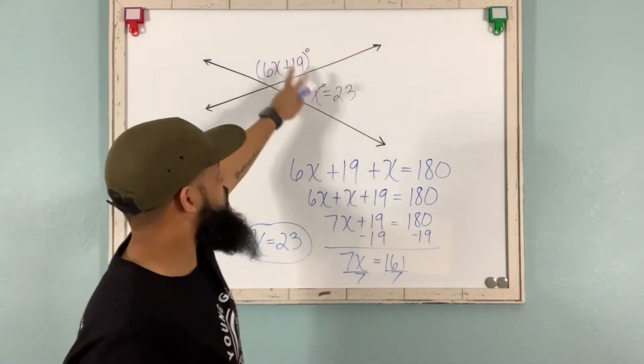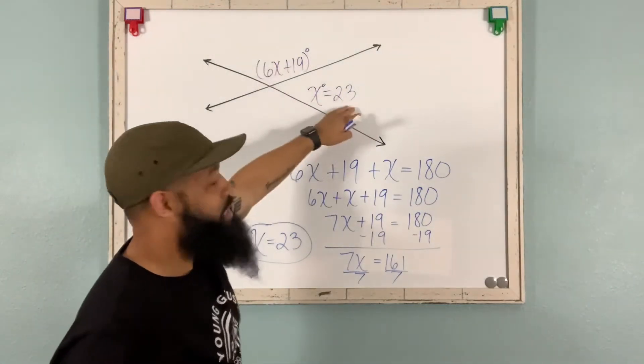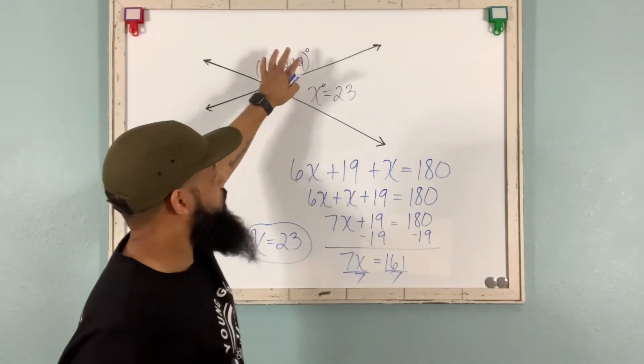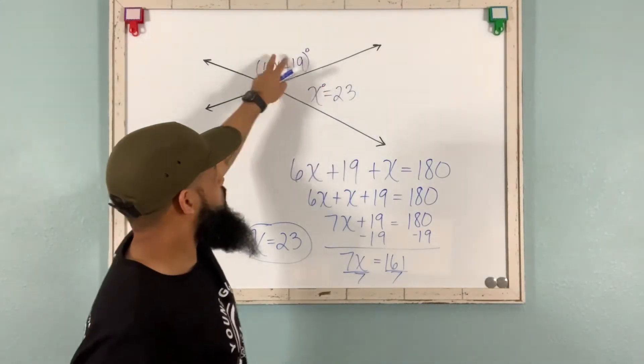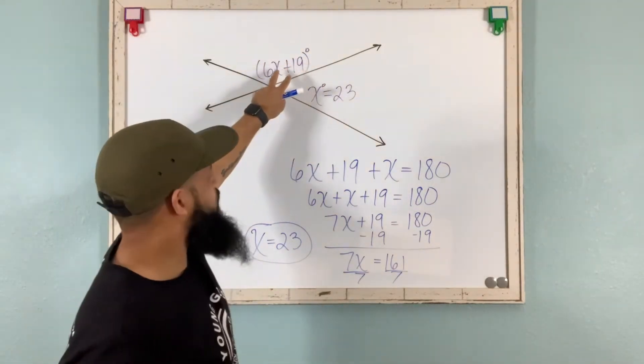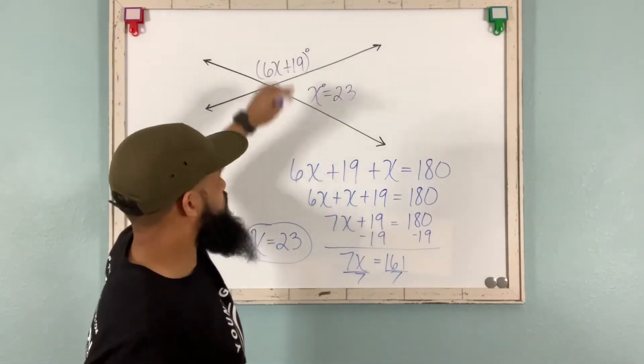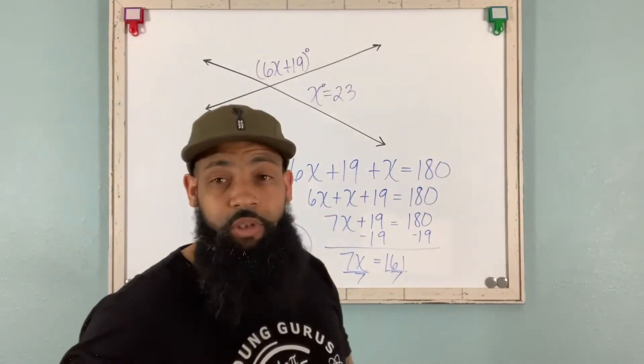Or because these are a linear pair, we can say 180 minus 23 equals the value of this angle. So that would be 167 degrees. I'm sorry, 157 degrees for this one. That's your first example.